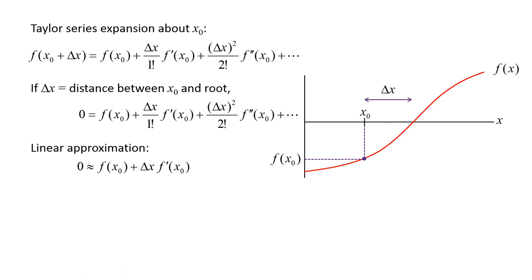Although this is a crude approximation when delta x is large, the approximation usually becomes better as we get closer to the root since delta x becomes smaller. Graphically, what we have done is approximate the actual function as a straight line that starts at f evaluated at x0, has a slope of f' evaluated at x0, and terminates at some point on the x-axis, which we will call x1.